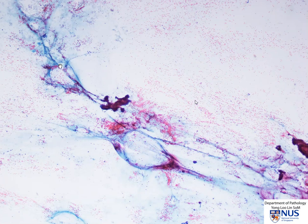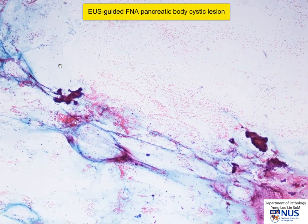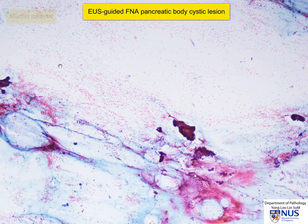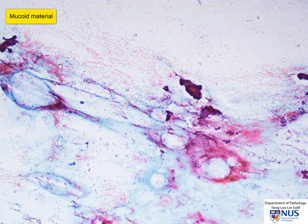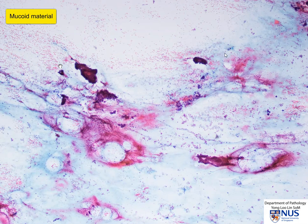Here is an alcohol-fixed smear from an EUS FNA sample taken from a cystic lesion in the body of the pancreas. As we move around at low power, we can see that there is some mucoid material in the background, as well as some tight, cohesive clusters of cells.